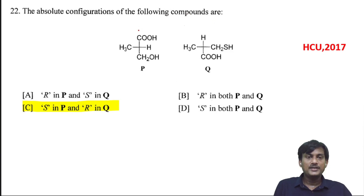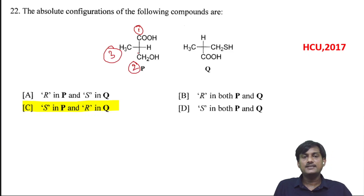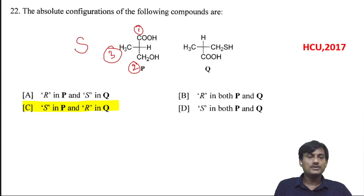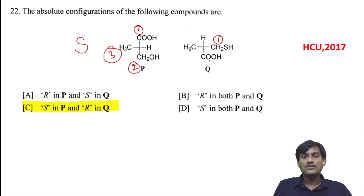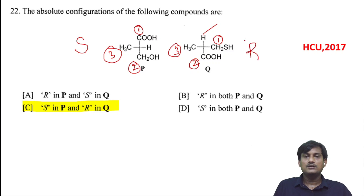The absolute configuration of the following compounds: for the first compound, assign priorities 1, 2, 3; hydrogen is at horizontal. Connecting 1, 2, 3 gives clockwise, but since hydrogen is at horizontal (not wedge/dash), you get S configuration. For the second compound (CH2SHCOOH), the carbon attached to sulfur gets first priority since the atomic number of sulfur is greater than oxygen; assigning second and third priorities and connecting gives clockwise with hydrogen vertical — R configuration. So the first is S and the second is R.